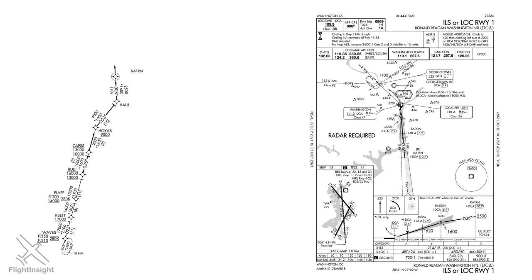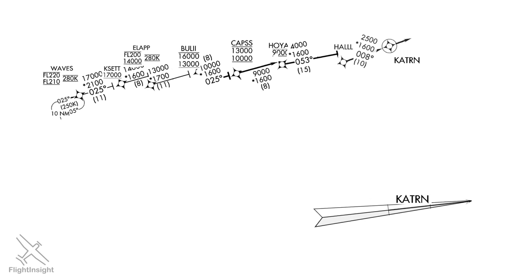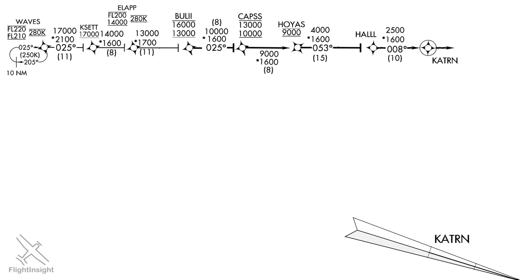Here's the CAPS-3 arrival for DCA. Notice that a lot of the symbols — like speed and altitude restrictions and mileages — are very similar to what you find on the enroute charts. Some STARs, like this one, are designed to connect arriving aircraft directly onto an initial approach fix. The CAPS-3 arrival ends at the Catron intersection, which is also the first fix of the ILS to Runway 1. MEA and MOCA symbols are given just like on enroute charts — don't mistake those for the altitudes you're supposed to fly on the arrival.